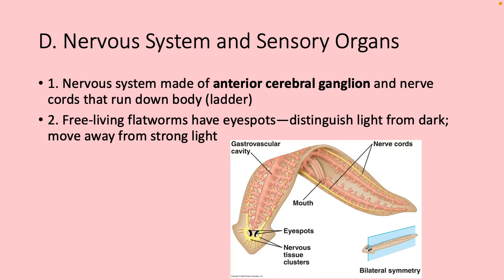Nervous system and sensory organs: they have nerve cords that run alongside the organism, kind of like the flame cells. They have a bunch of ganglia concentrated in the anterior region, and eye spots that detect light. Flatworms in the presence of light will move away from it.